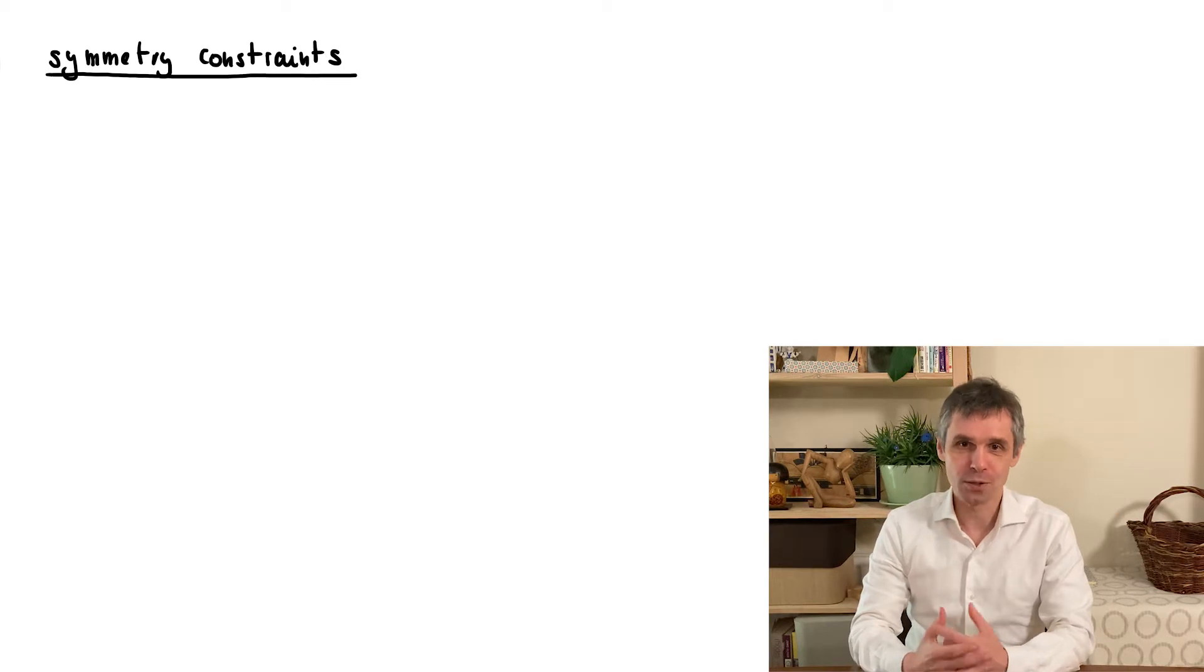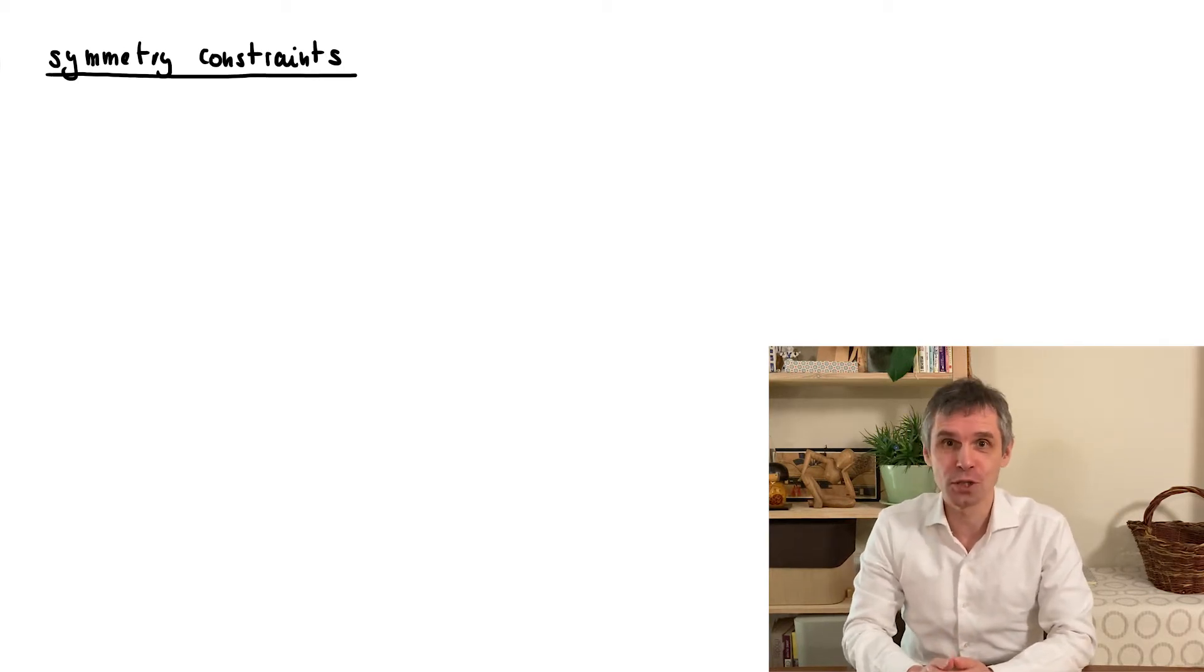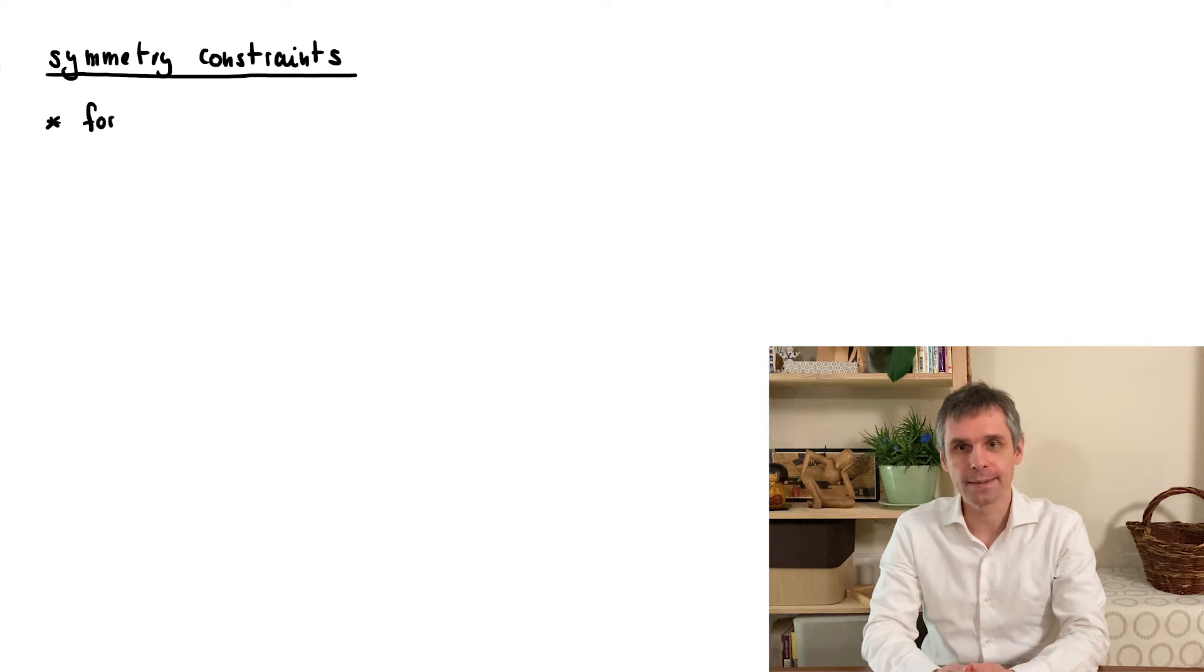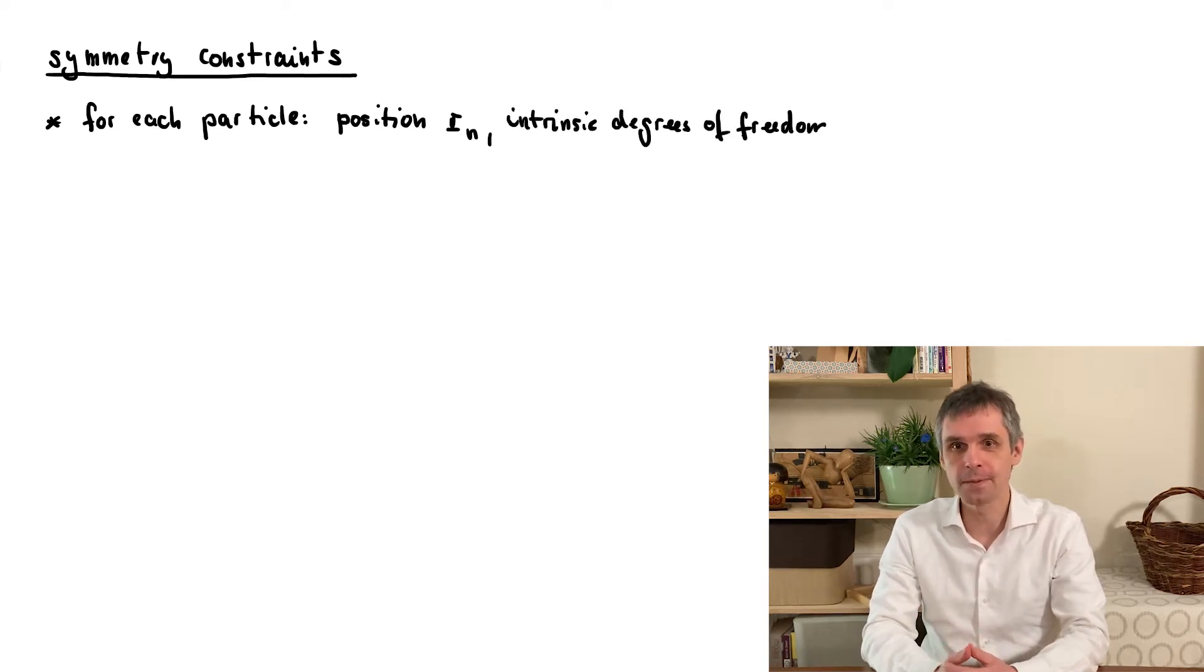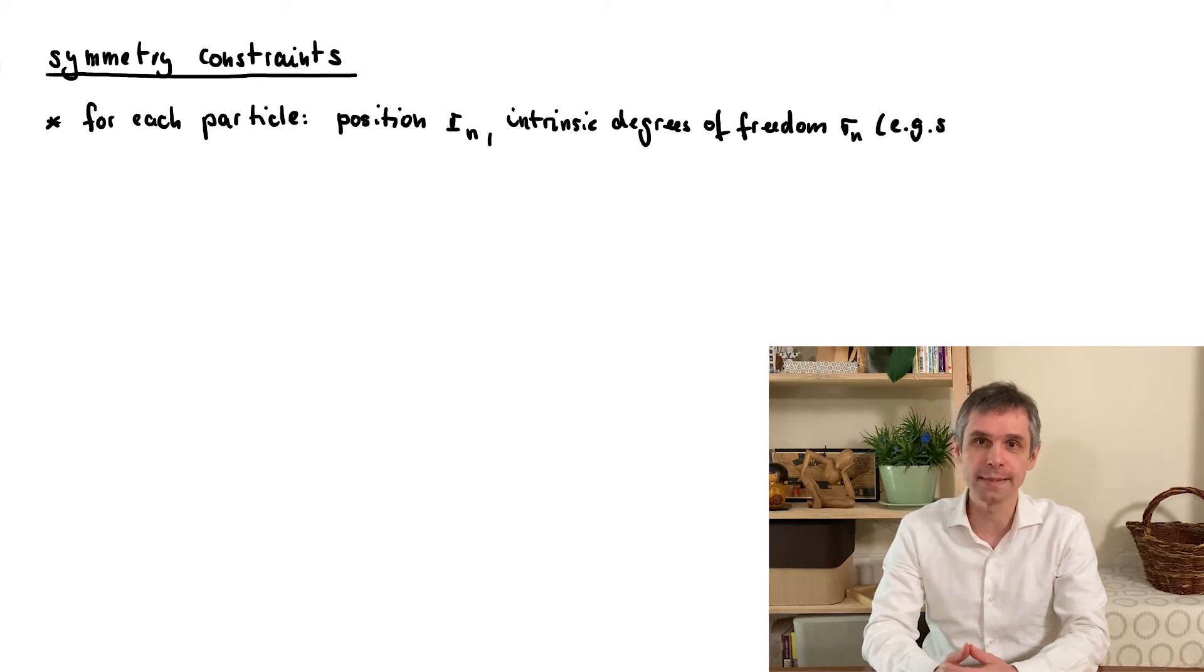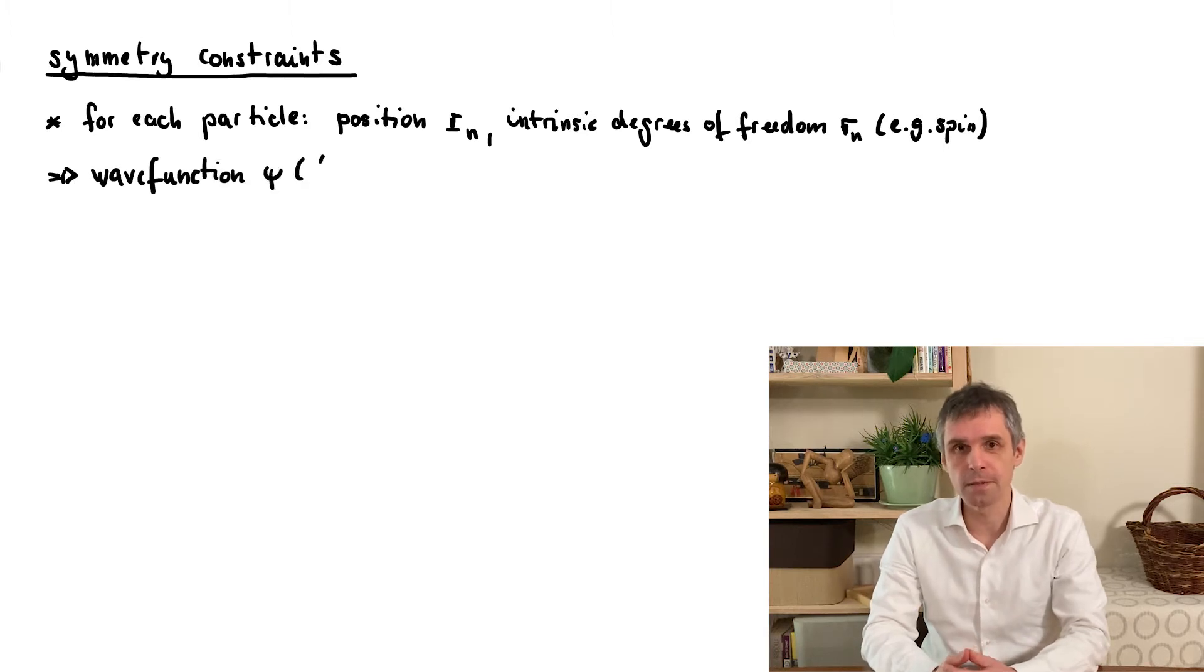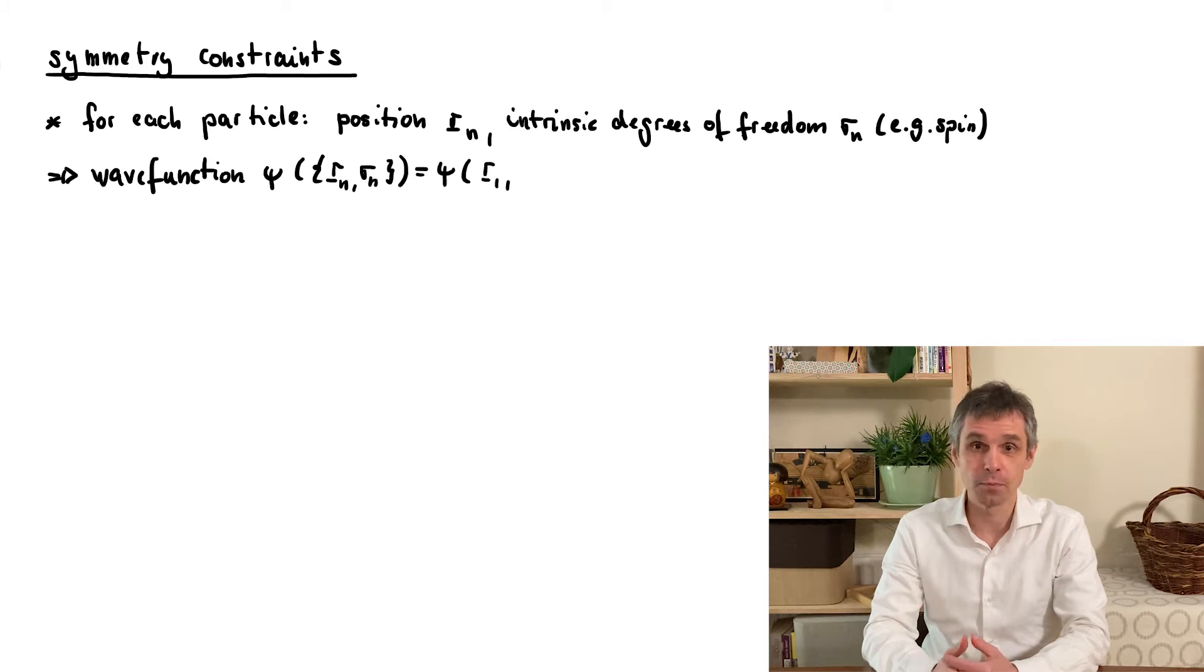Okay, so let us go straight to the essence of this chapter. We deal with particles, and we are interested in their positions as well as the values of any discrete intrinsic degrees of freedom, such as their spin. Here, I will subsume all these intrinsic degrees of freedom into a single index sigma. Therefore, as established in the previous chapter, the wavefunction will be a function of all these properties...